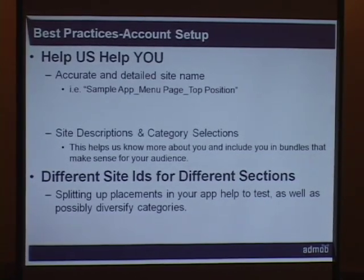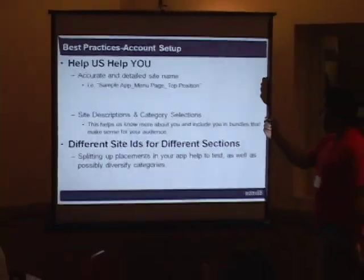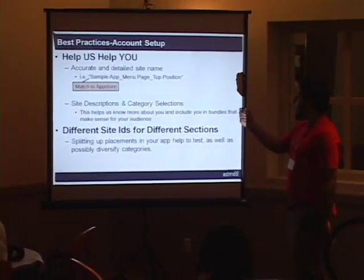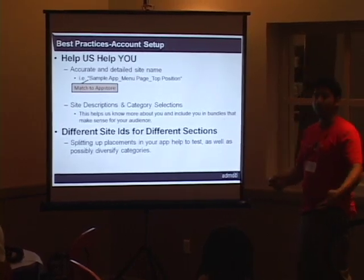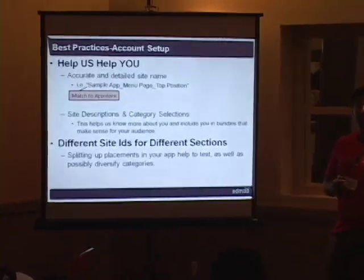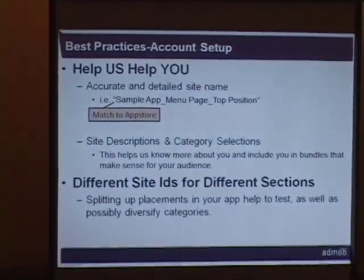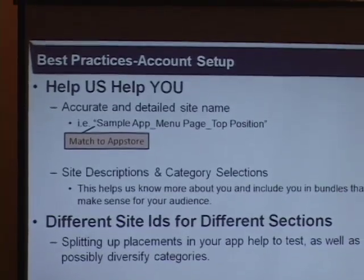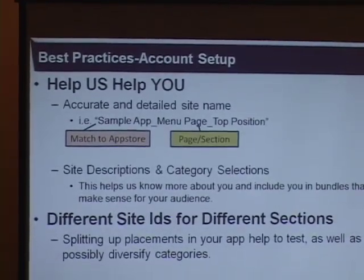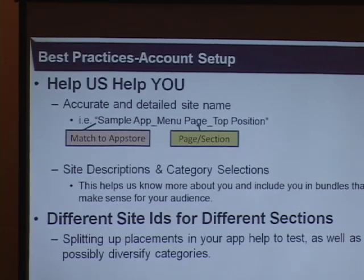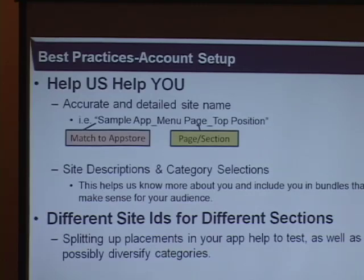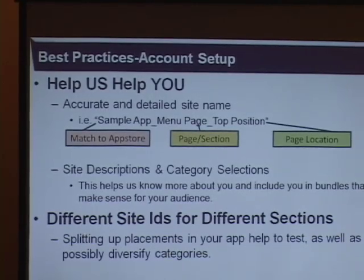For instance, when naming your site use this syntax: give us the name of your app, which would match to the app store. So if our marketing or sales teams are looking to put you in a bundle, they can easily see you're on the app store and view screenshots. Also specify exactly where your ad is shown on your app — if you have multiple pages like a menu, gameplay, and leaderboard, split those up and let us know exactly which site matches to which page, and if it's a different location on the page, specify that too. Being as specific as possible helps us find your app and put you in more bundles.